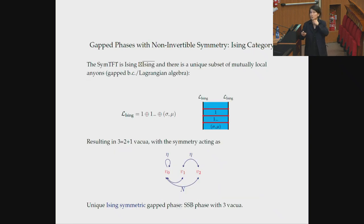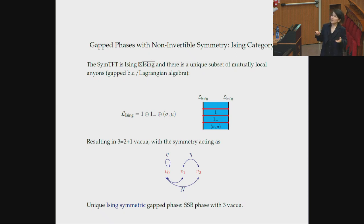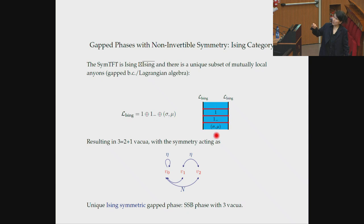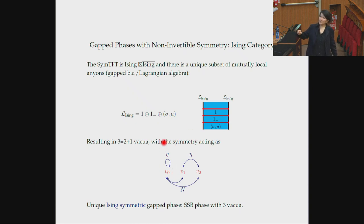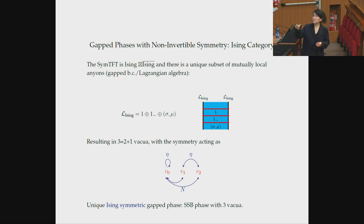We can apply this for non-invertible symmetries too. For the Ising category, the SymTFT is the double of Ising — Ising tensor Ising-bar. There's a single Lagrangian algebra, giving three vacua. Using the linking of topological lines with the order parameter lines, we can see how the symmetry acts: Z2 acts trivially on one vacuum and exchanges the other two, giving a trivial Z2 and an SSB-Z2 phase, while the non-invertible symmetry acts between these non-trivially. This is how the Ising gapped phase, or Ising SSB phase, is realized in the SymTFT context.